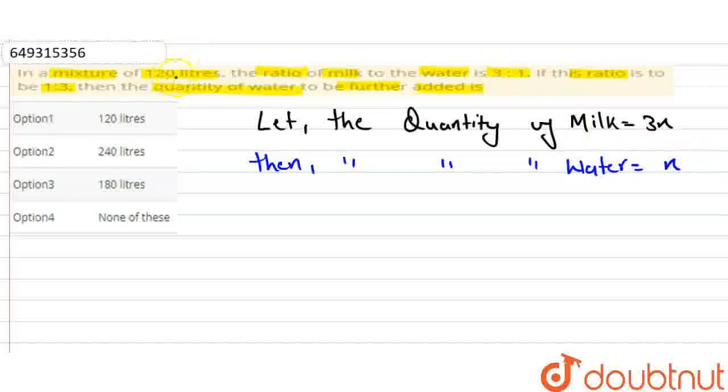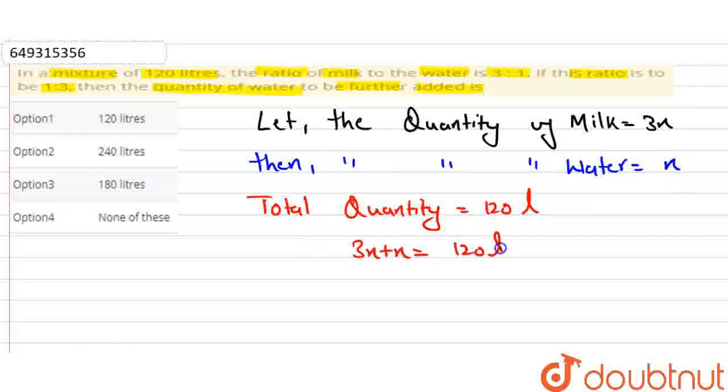We have a total mixture of 120 liters. The total quantity of milk plus water is 3x plus x equals 120 liters. So 4x equals 120 liters, which means x equals 30 liters.